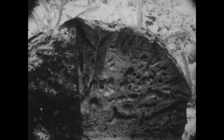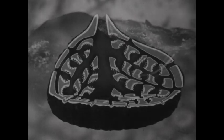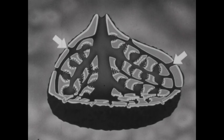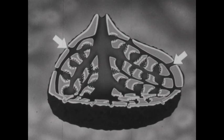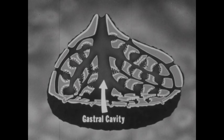A portion of this horny sponge has been cut away so we may view the interior of the sponge body. The pores located in the body wall of the sponge are the openings of canals, which lead from the outer layer to the inner layer of cells. These canals lead to the gastral cavity, a large cavity located in the center of the sponge.